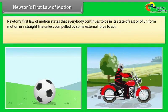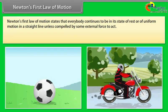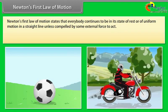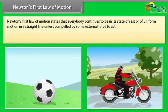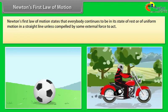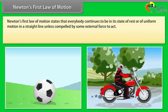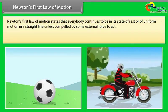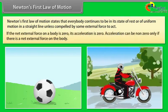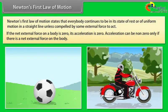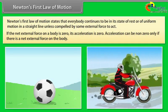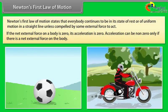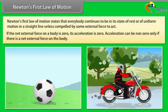Newton's first law of motion states that every body continues to be in its state of rest or of uniform motion in a straight line unless compelled by some external force to act. If the net external force on a body is zero, its acceleration is zero. Acceleration can be non-zero only if there is a net external force on the body.